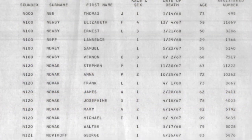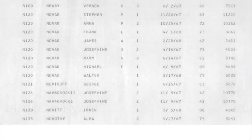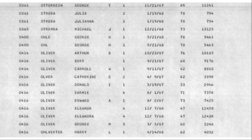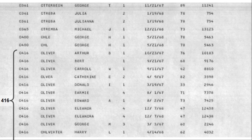It starts with the N's, so we need to scroll down to the O's. Now the code we found was 0416, so we can look for that code here. The code covers names that sound similar, so we've got names like Oliver and Overton under 0416.